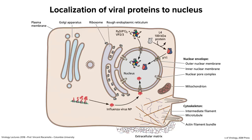The influenza virus nuclear protein is made in the cytoplasm but must go into the nucleus to bind viral RNA — that's where viral RNA is made — so it has a nuclear localization signal. The SV40 capsid subunit, assembled in the cytoplasm as pentamers of five VP1 molecules plus minor proteins, also has NLSs and goes into the nucleus, because SV40 DNA replicates and particles assemble there. Adenovirus hexon — the capsid made of hexons and pentons — is also made as a monomer in the cytoplasm and imported, since adenovirus DNA replicates in the nucleus.